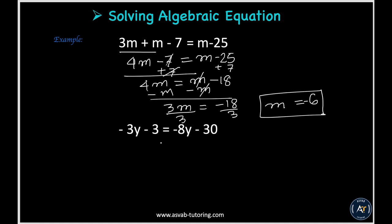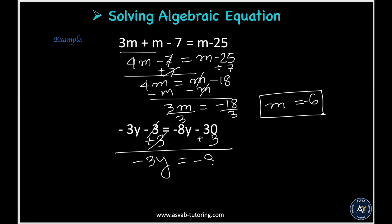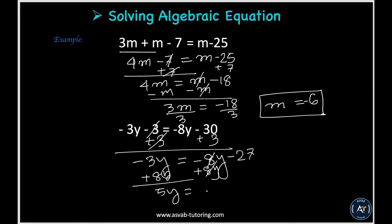For the next problem, add both sides by 3 — the 3s cancel out. You now have negative 3y equal to negative 8y minus 27. Add both sides by 8y: 8y minus 3y gives 5y equal to negative 27. Divide both sides by 5, and y equals negative 5 and 2 fifths.